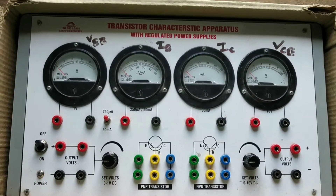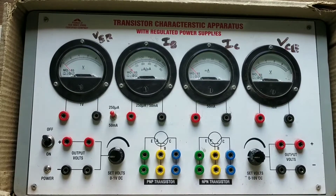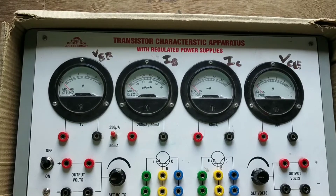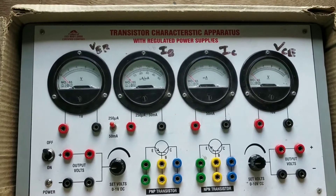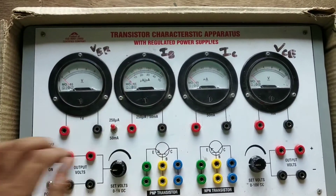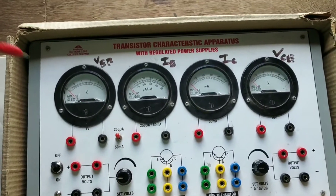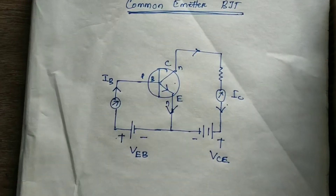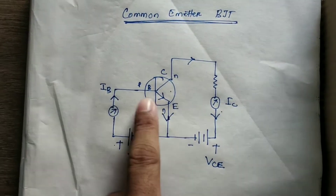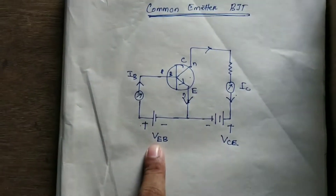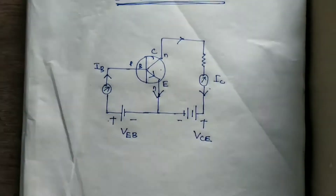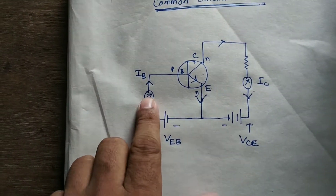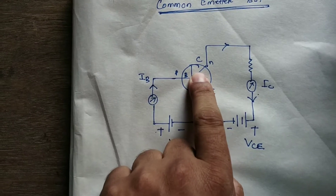Today we are going to discuss the common emitter bipolar junction transistor connection and its VI characteristics. This is the instrument we are going to use. This is your common emitter circuit diagram showing VEB, VCE, IC, IB, emitter, base, and collector.